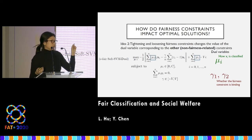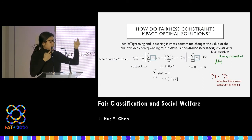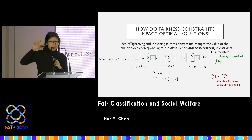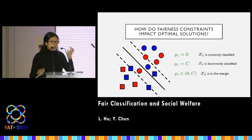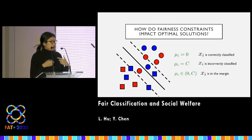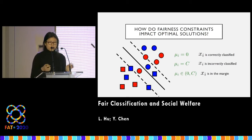More importantly, we track these dual variables. In particular, we look at the mu's and the gammas. The mu's correspond to how individuals are being classified. We don't actually care about the exact value of mu — what we care about is whether mu is zero (correctly classified), whether it equals C the cost parameter (incorrectly classified), or whether it's in between those two (floating in the margin).